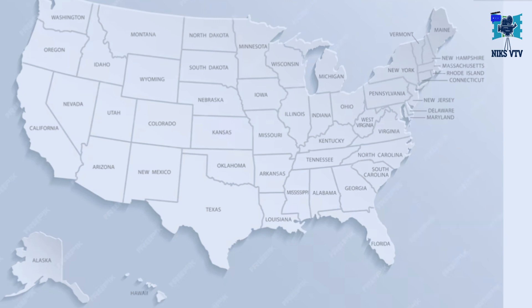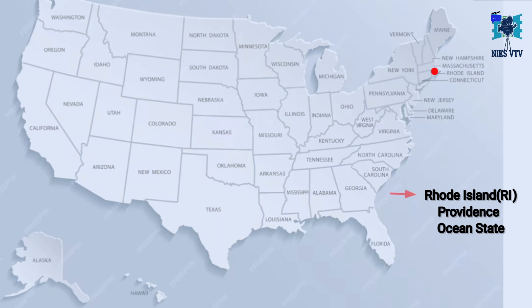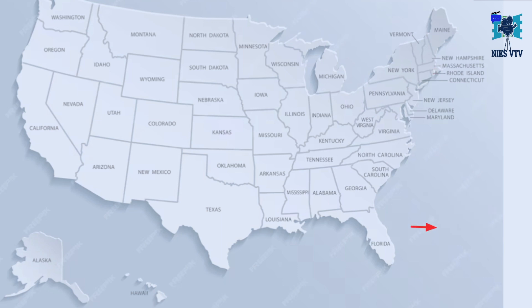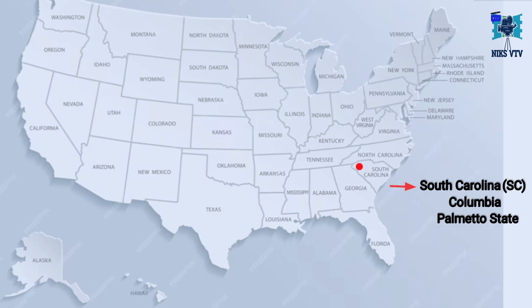Next state is Rhode Island, RI is its abbreviation, its capital is Providence, its time zone is EST, and its nickname is Ocean State. Next state is South Carolina, SC is its abbreviation, its capital is Columbia, its time zone is EST, and its nickname is Palmetto State.